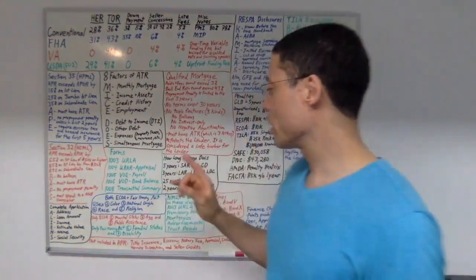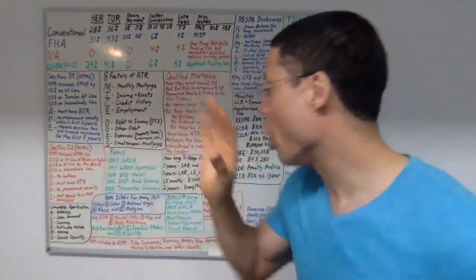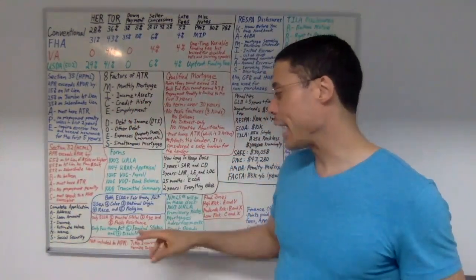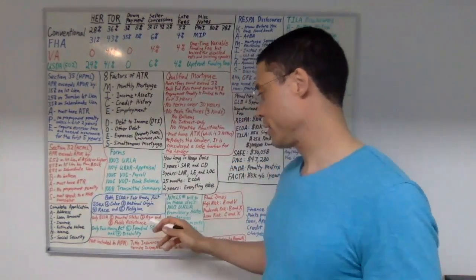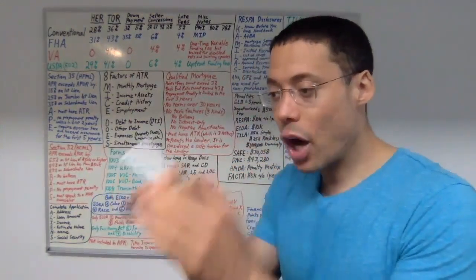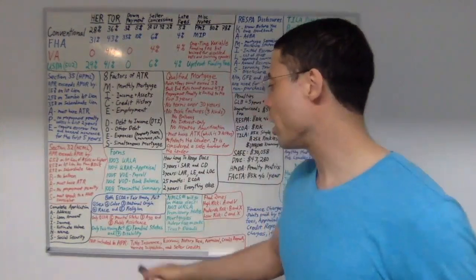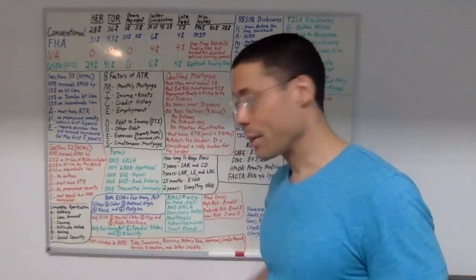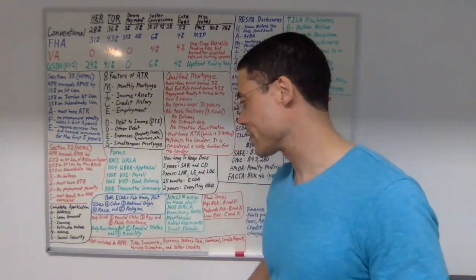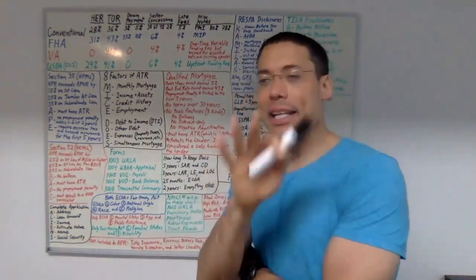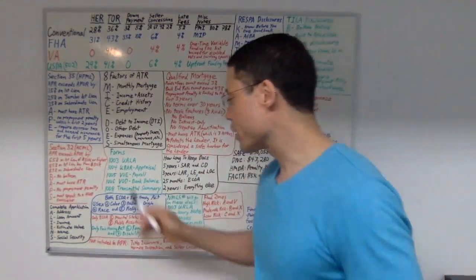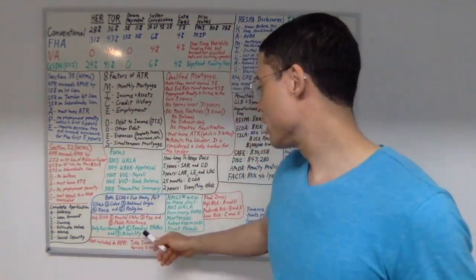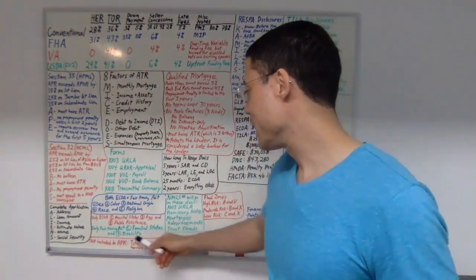There are three protected classes under ECOA only — not under the Fair Housing Act: marital status, age, and public assistance. And there are two protected classes under the Fair Housing Act only — not under ECOA: familial status and disability.